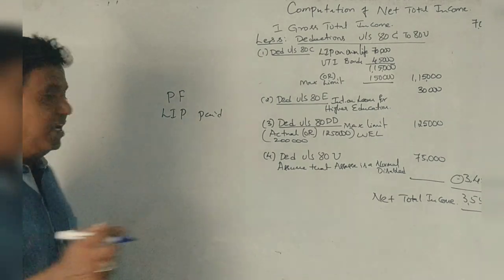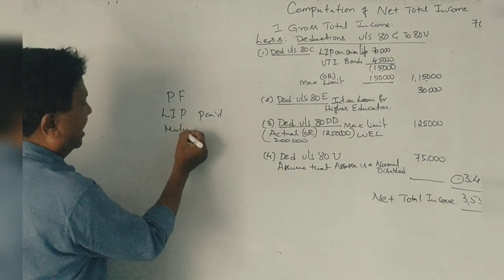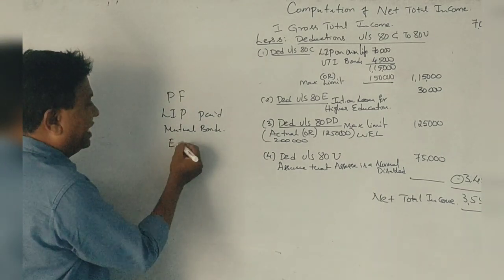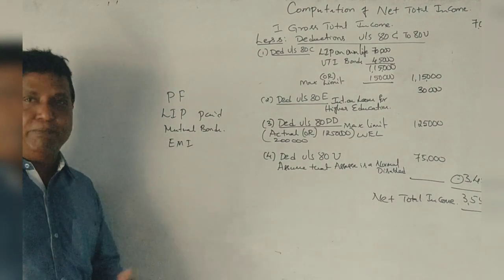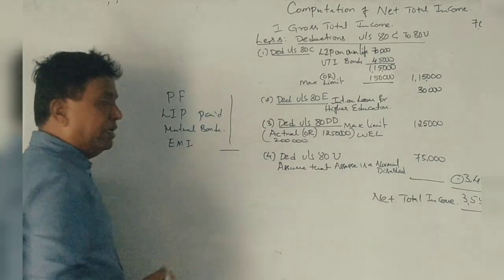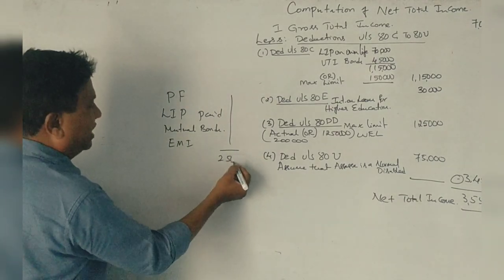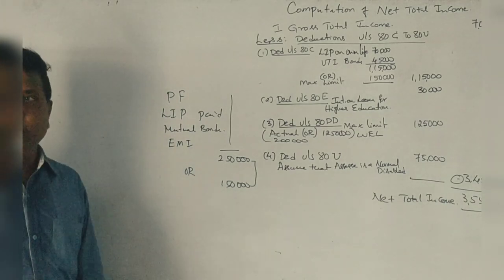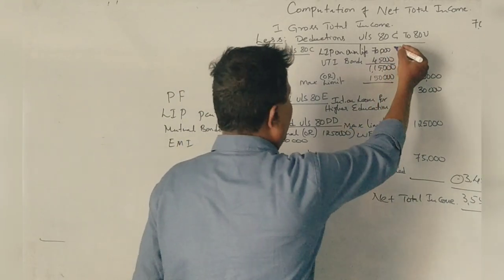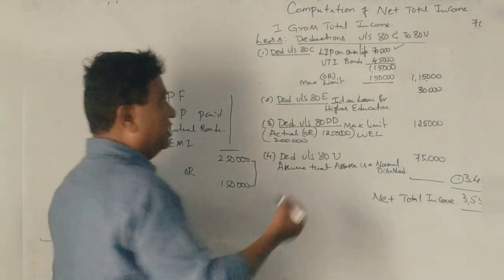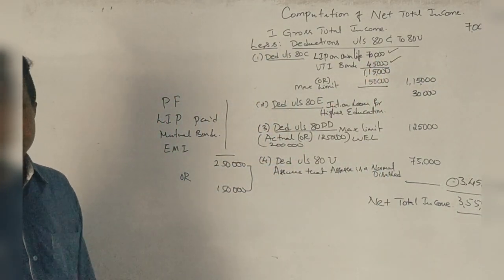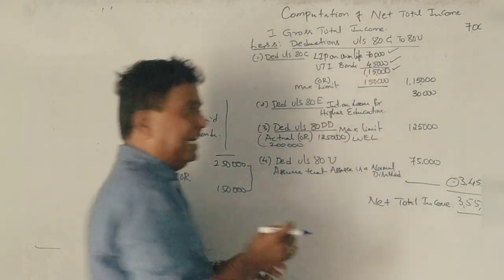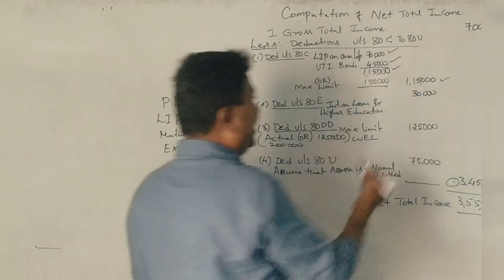Mutual funds are purchased. The life insurance premium is thirty thousand rupees, and return to savings is fifty thousand rupees — total one lakh fifteen thousand rupees as savings contribution. The maximum limit under Section 80C is one lakh fifteen thousand rupees. Comparing one lakh fifteen thousand rupees, the deduction is one lakh fifteen thousand rupees.